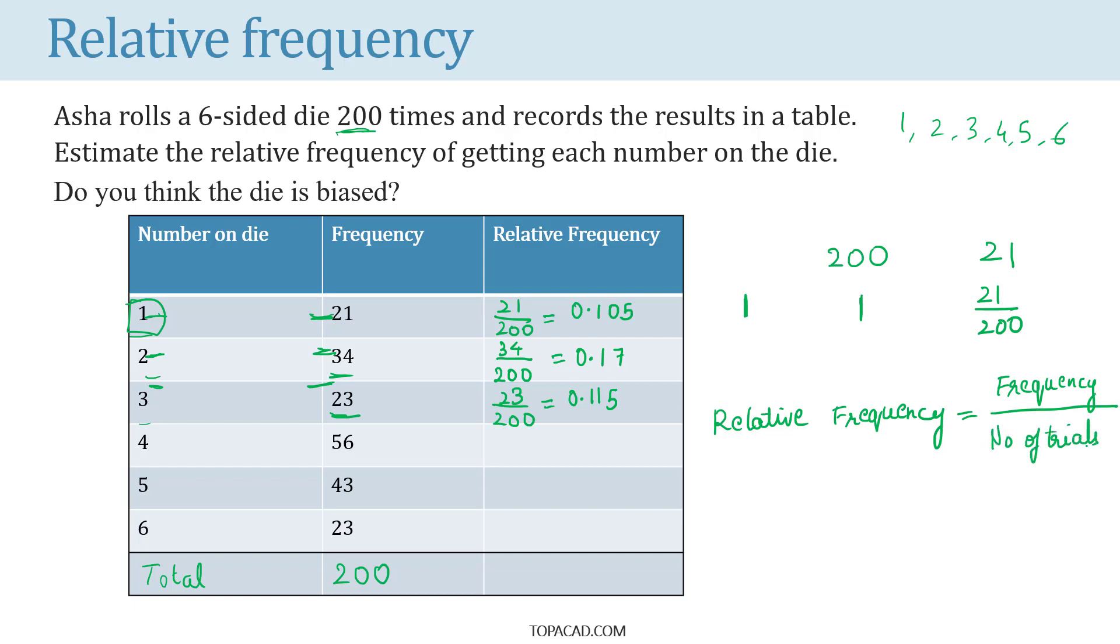So, relative frequency of number 4 is frequency of 4 which is 56 divided by total number of trials which is 200.